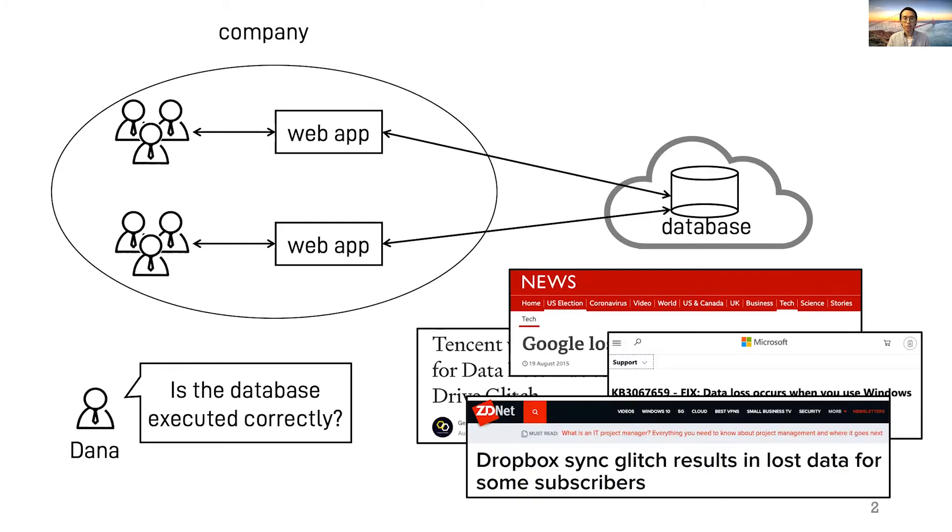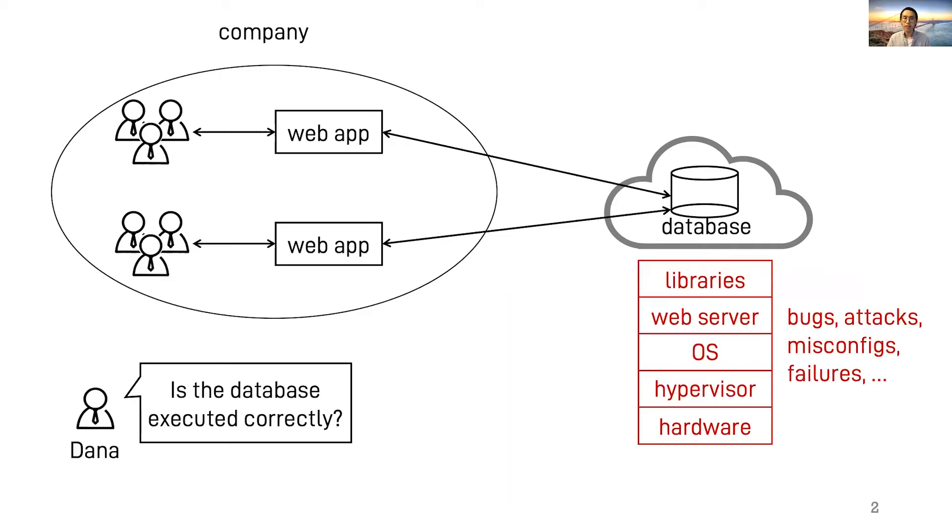Dana's concern is legitimate. We've seen many cloud failures in reality. Meanwhile, any internal corruptions within cloud may result in databases producing incorrect behaviors, as could happen from bugs, internal or external attacks, misconfigurations and unexpected failures at any layer of the execution stack. So the question is, how can Dana make sure that the database is executed correctly?